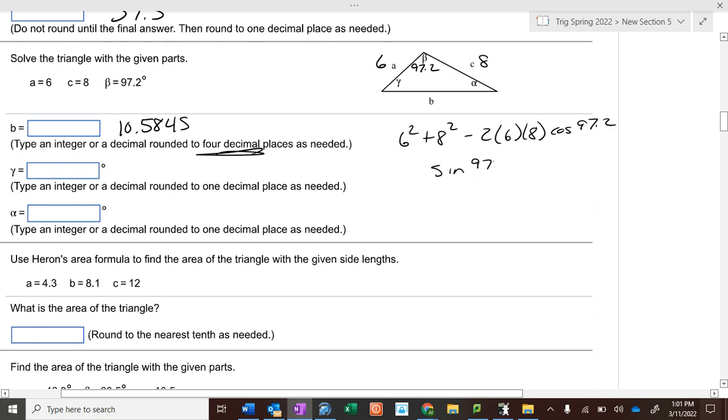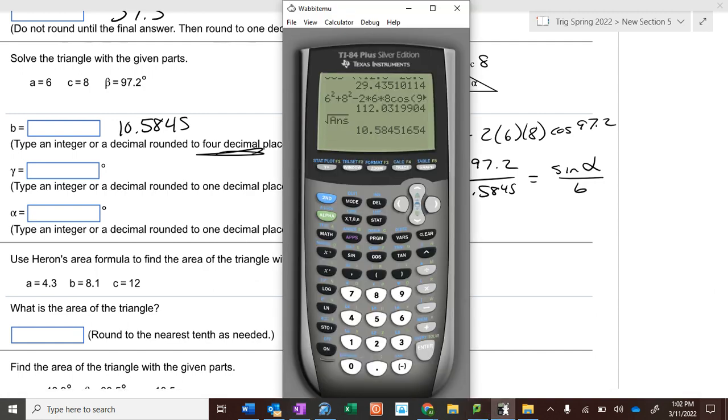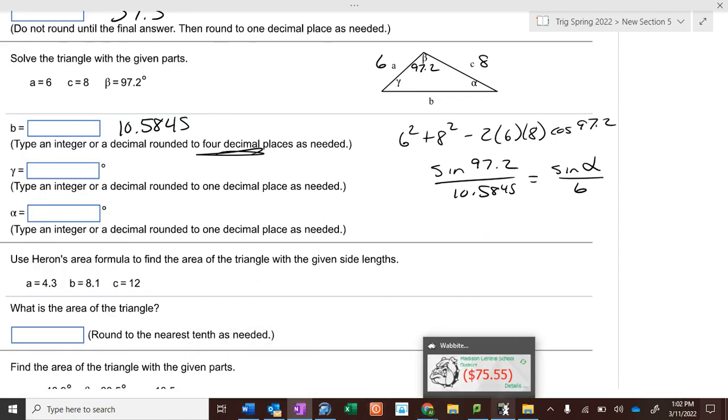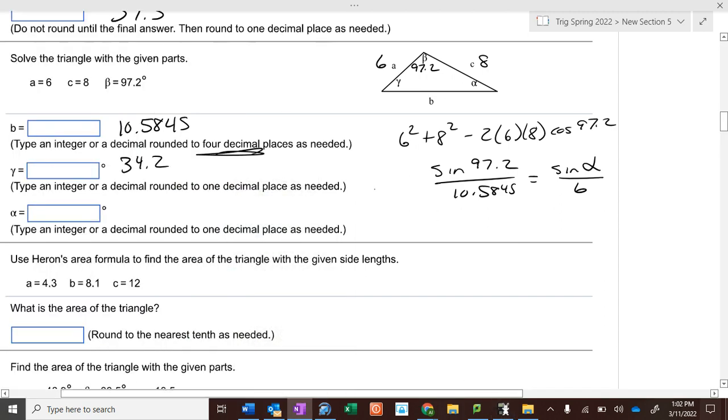Then we use the law of sines: the sine of 97.2 over 10.5845 equals the sine of alpha over 6. And then use the law of sines to finish it. So 6 times the sine of 97.2 divided by this answer that we had here, second sine, second answer, 34.2. And 34.2 plus 97.2 is 131.4, so this is 48.6.